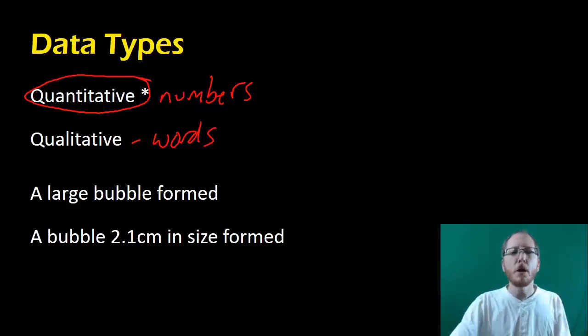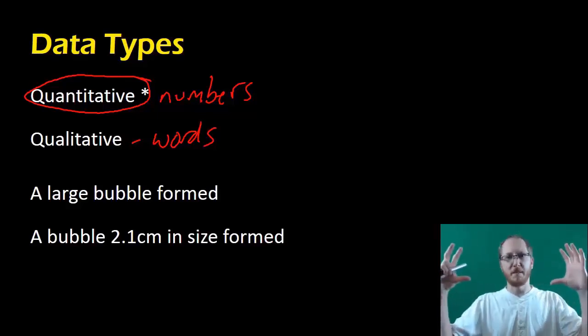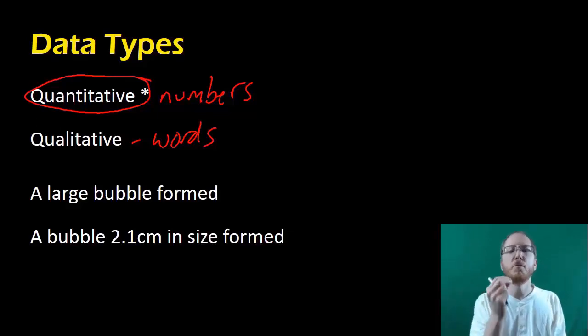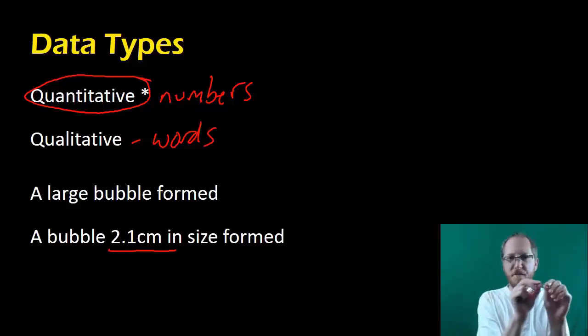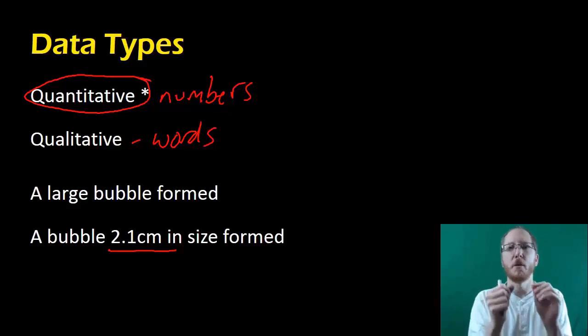So an example, we can say a large bubble formed. That doesn't let us know anything exact. I can't say now you recreate how big that bubble was from me telling you it was large. You might have a huge range of bubble sizes that people come up with, versus if I say the bubble was 2.1 centimeters. You could pull out any ruler, meter stick, and find that spot. Everybody should be able to agree. That's why we prefer quantitative measurements whenever possible.